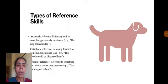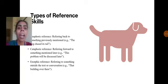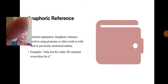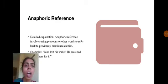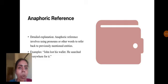There are three types of reference skills. First is anaphoric reference, which involves using pronouns or other words to refer back to previously mentioned entities. For example, John lost his wallet, and in the next sentence, the pronoun 'he' is used to indicate John.